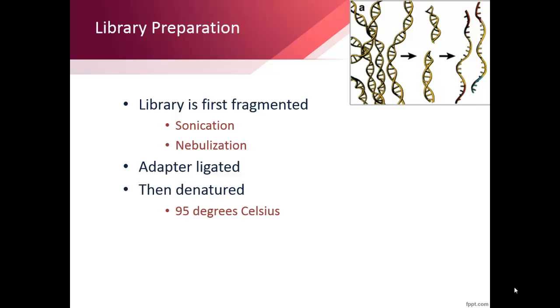In order to prepare the library for emulsion PCR, it must first be fragmented into smaller pieces of about 300 to 800 base pairs that can be sequenced. The process of cutting up a large strand of DNA, sequencing it, and then putting it back together is referred to as shotgun sequencing.